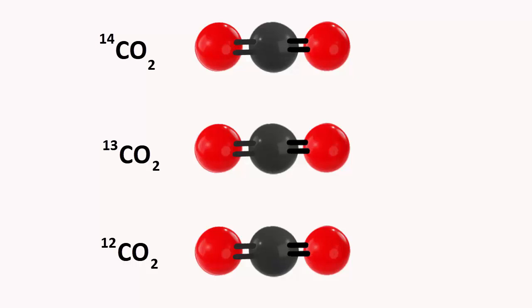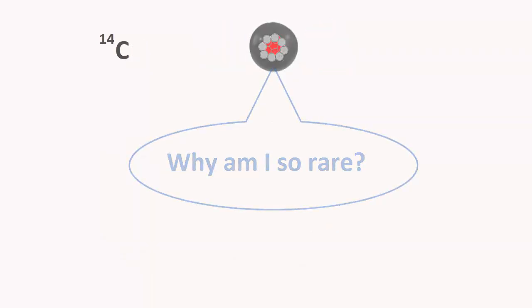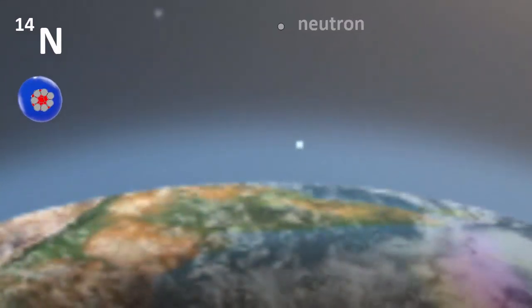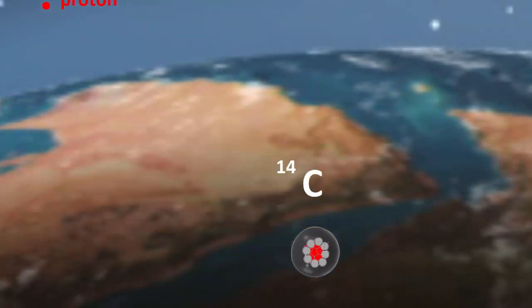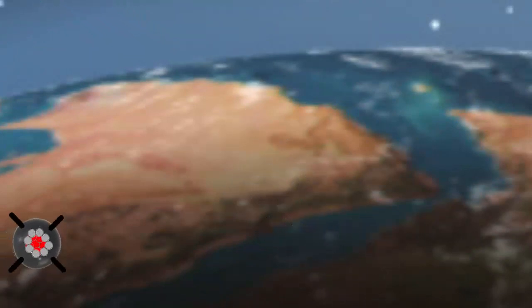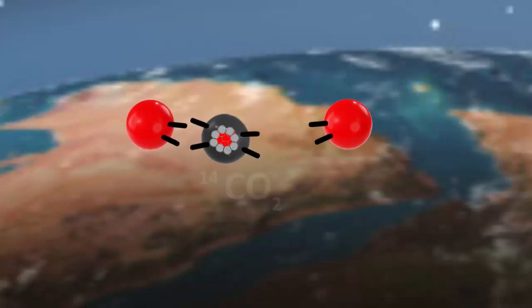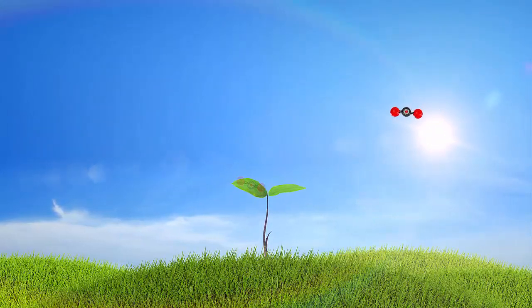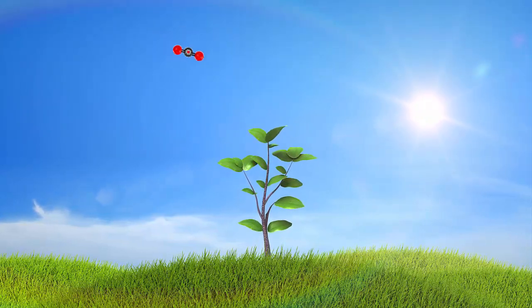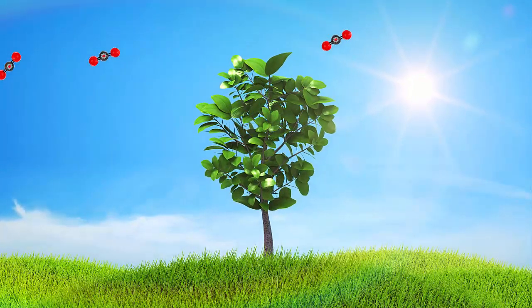But why is only one in a trillion carbon atoms carbon-14? Where do they come from? They're made when a neutron is knocked out of atoms high in the atmosphere by cosmic rays from outer space, then bombards a nitrogen atom in the air, turning it into a carbon-14 atom. Like all carbon atoms, these carbon-14s react with oxygen to become CO2 molecules, then get absorbed by plants during photosynthesis. Animals that eat the plants, and animals that eat those animals, will also have some carbon-14 atoms in their bodies.